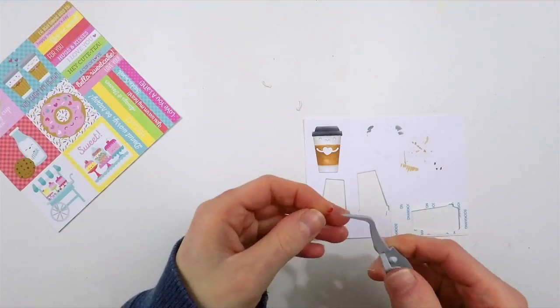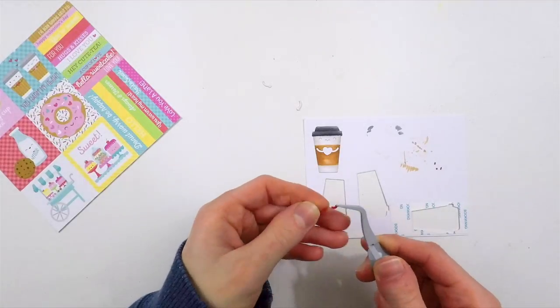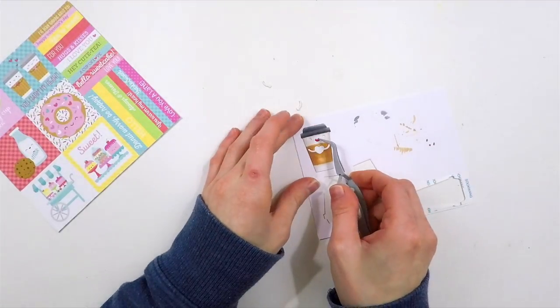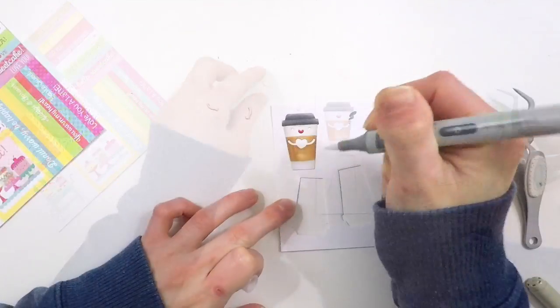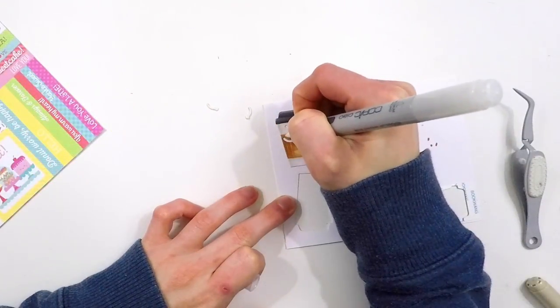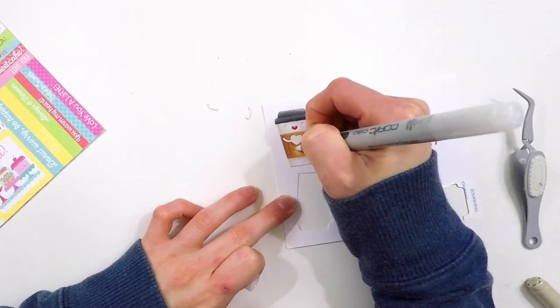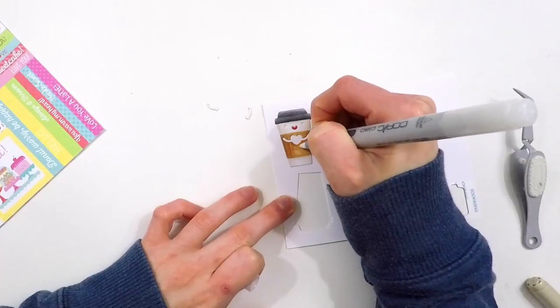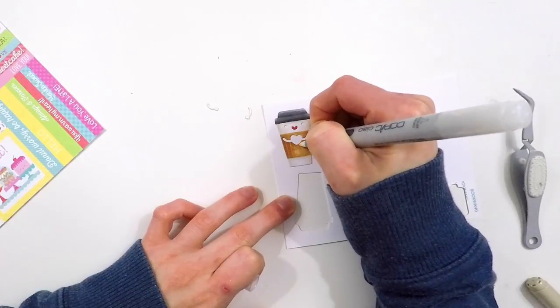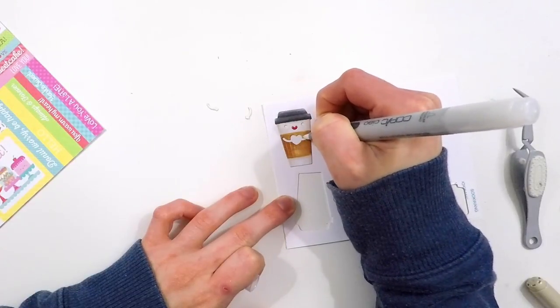Once I colored in my images, I took off the sticker backing of the mug itself and adhered it onto some cardstock. Now I'm fitting the little mouth inside of where it was die cut. Before I add anything else, I want to use my colorless blender and add some detail to the sleeve of the coffee cup.